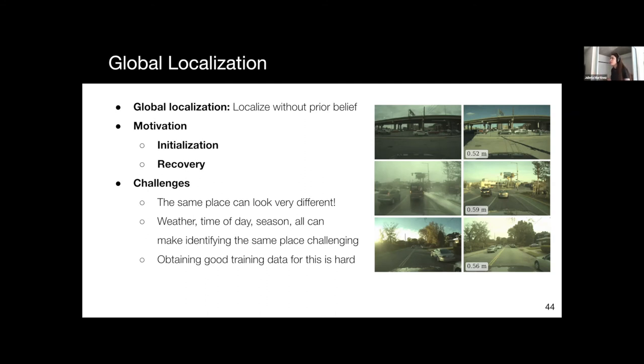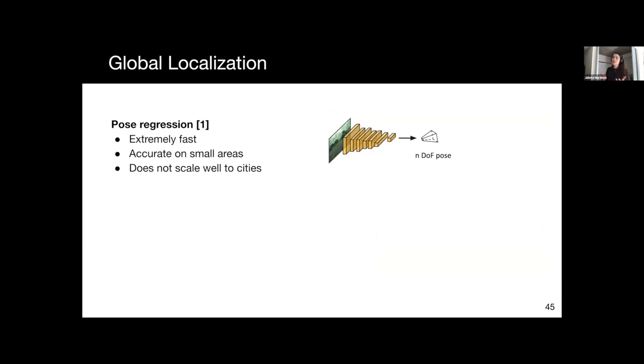How do people often address this? There are basically two main approaches to global localization. The first one is called pose regression. In this case, we have an image or a sensor reading in general. We pass it through some system, usually a network of some sort, and then at the end of the network, we have a head that regresses the pose parameterization directly. The advantage of this is that it's extremely fast. You basically just have to run inference once on the network. And this is actually shown to be very accurate on relatively small areas, say around a building or one or two blocks. These methods can actually work pretty well. Unfortunately, they haven't been shown to work very well for large-scale cities.